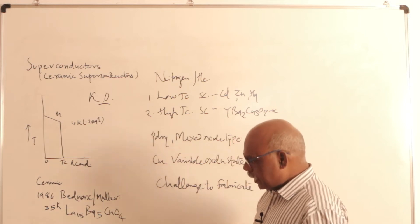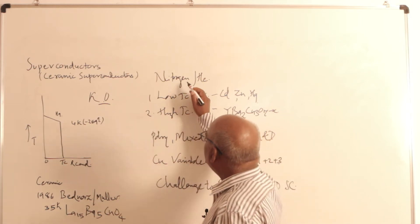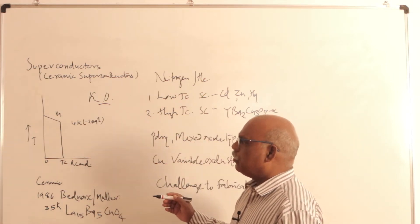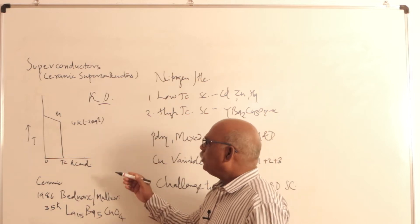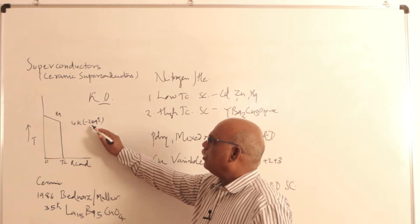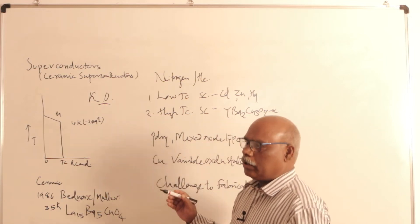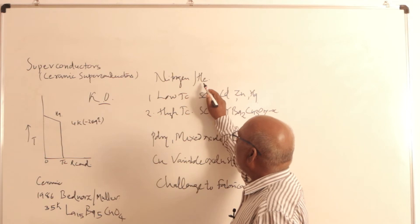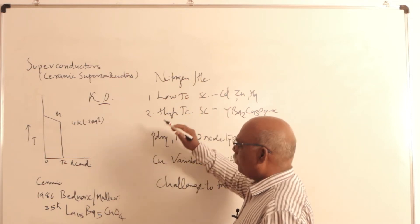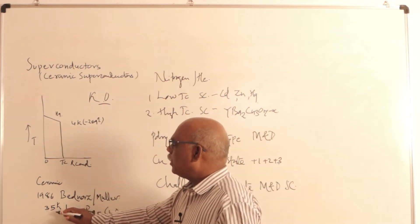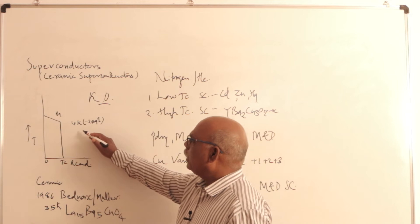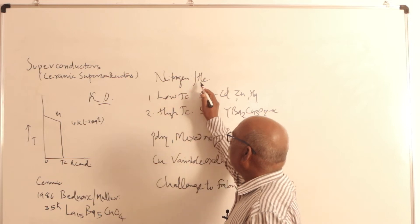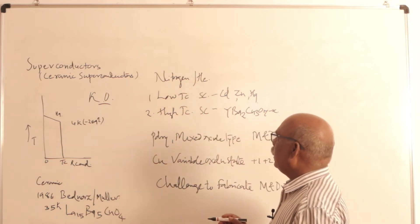By this discovery it became possible to use nitrogen for cooling purposes. To make a superconductor, we have to cool the material below minus 269 degrees centigrade. Previously, liquid helium was used, which is costly. But since 35 Kelvin is a somewhat higher temperature than 4 Kelvin, we can now use nitrogen for cooling the material instead of costly helium.